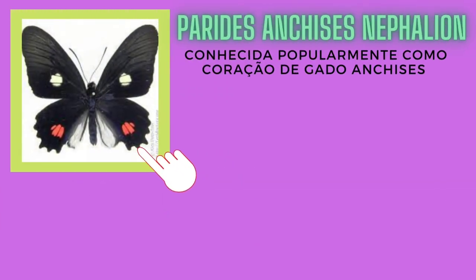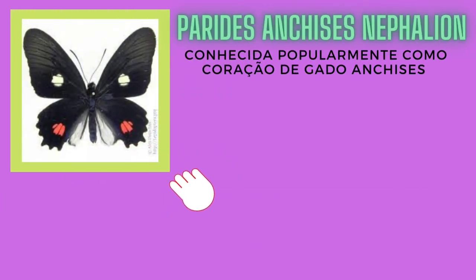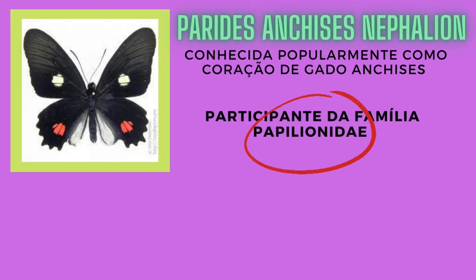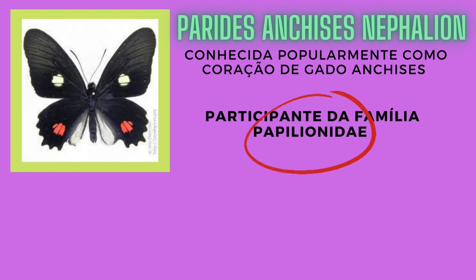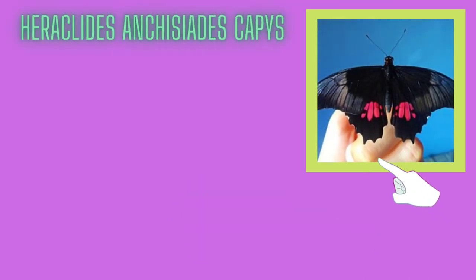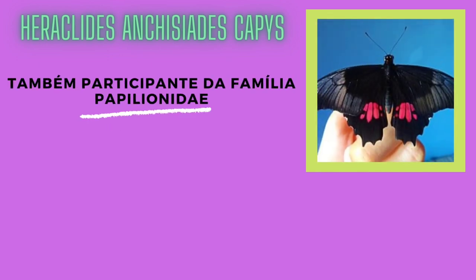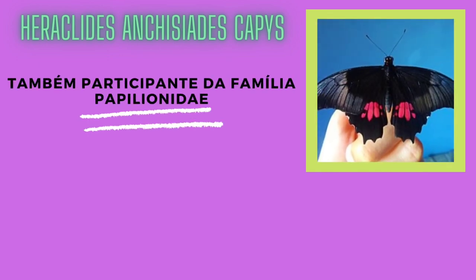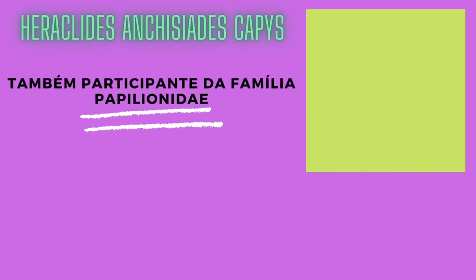Essa é a borboleta da espécie Parides anchises nephalium, mais conhecida como coração do gado anchises. É uma espécie da família Papilionidae nativa das Américas. É uma borboleta comum e não tão ameaçada. Essa é a borboleta de espécie Heraclides anchisiades capes, uma espécie neotropical, também da família Papilionidae.